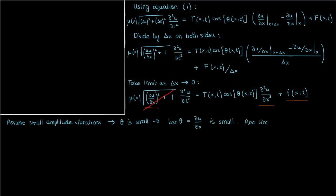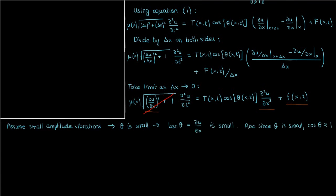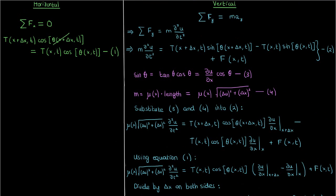In addition, because theta is small, cosine theta is approximately 1. And if we go to the equation for horizontal forces, then that means the tension is constant throughout the string.